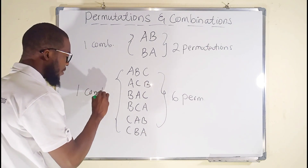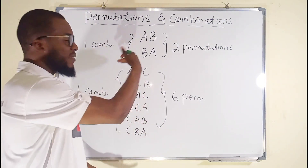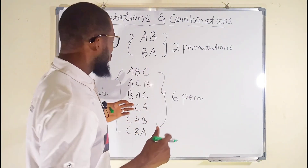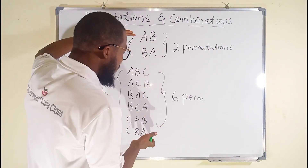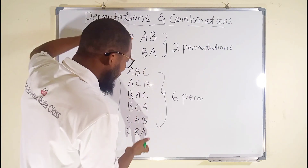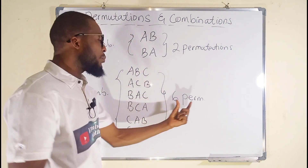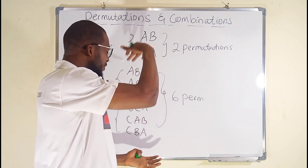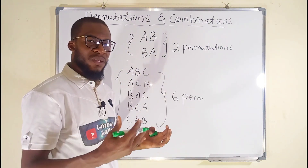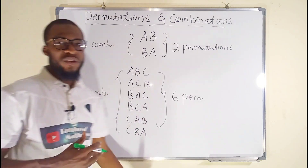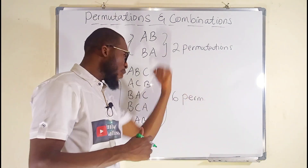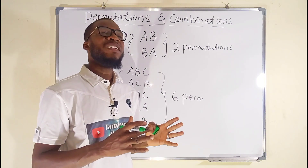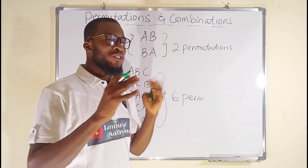But all of these are considered as one combination, because they are all letters A, B, C — just arranged in different ways. The arrangement of these letters in different forms is what permutation is about, while the order not mattering is what combination is about. So we have one combination and six permutations. This is where the term factorial comes into play.